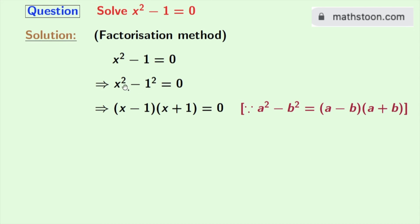Applying that, we will get this equal to (x - 1)(x + 1) = 0. Now we all know that if the product of two numbers is 0, then the value of either of those numbers individually will be 0.